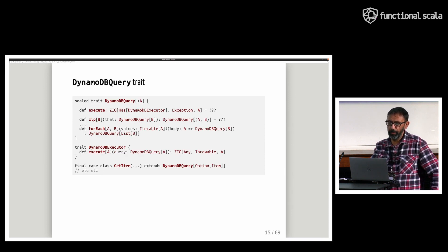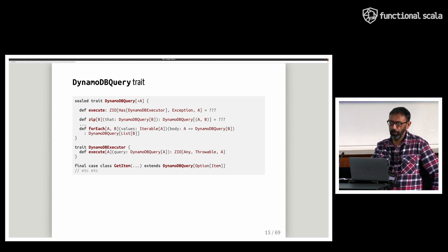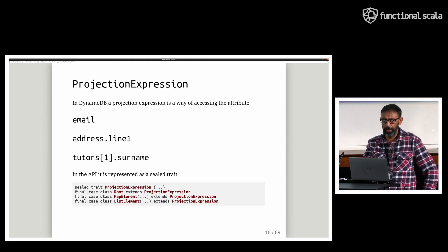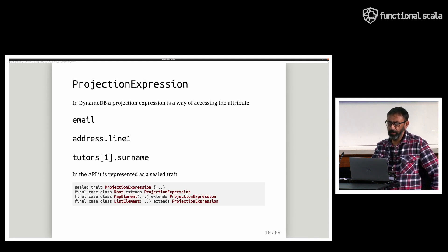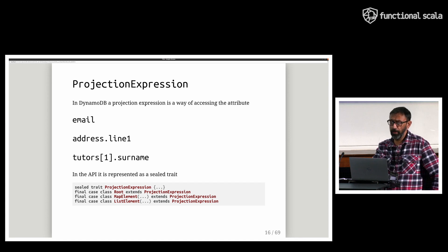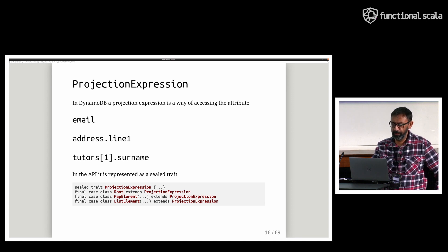The DynamoDB query type is polymorphic in type A, which represents a return type, and this is returned inside the ZIO by the execute method. AWS operations like getItem are modeled as sum types that extend this trait. In DynamoDB, a projection expression is a way of accessing an attribute in an item. Email is a simple root-level attribute; address.line1 is a map element using dot syntax; and tutors[1].surname is a list element using array syntax. In the API, it's represented as a sealed trait.